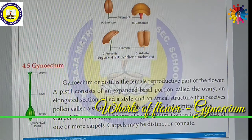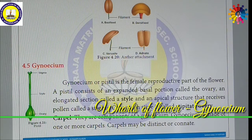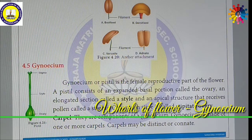Now we shall discuss about Carpels. If we cut the ovary, we can see the Carpels. Carpels are the components of the Gynoecium — the Gynoecium consists of Carpels. Just as the Androecium is made up of Stamens, Corolla is made up of Petals, and Calyx is made up of Sepals, similarly the Gynoecium is made up of Carpels.